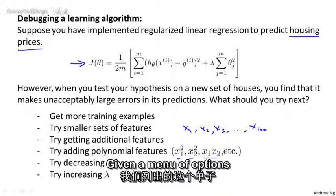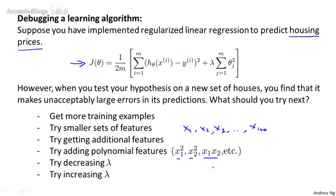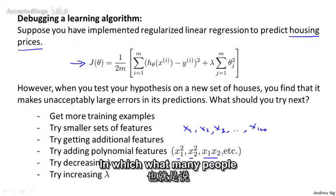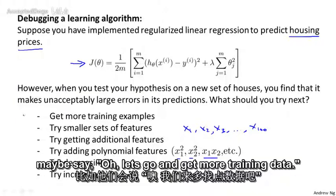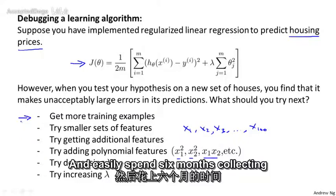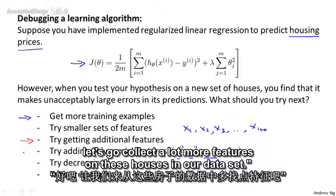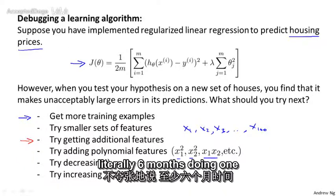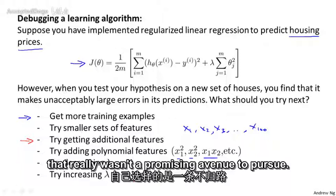Given a menu of options like these, some of which can easily scale up to like maybe six months or longer projects. Unfortunately, the most common method that people use to pick one of these is to go by gut feeling, in which what many people will do is sort of randomly pick one of these options. Like maybe say, oh, let's go and get more training data, and easily spend six months collecting more training data. Or maybe someone else will randomly say, well, let's go collect a lot more features on these houses in our data set. And I have a lot of times sadly seen people spend, literally six months doing one of these avenues that they had picked sort of at random, only to discover six months later that that really wasn't a promising avenue to pursue.